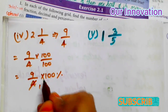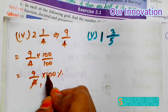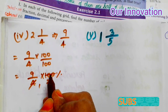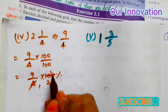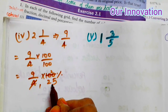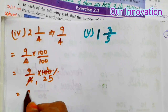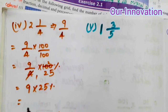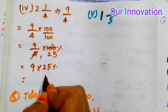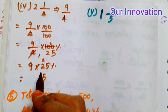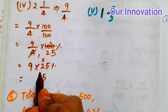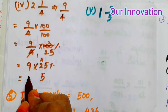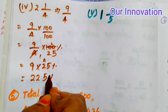Now cancel: 4 is 4, 25 into 4 = 100. Dividing: 4 × 1 = 4, 4 × 2 = 8, balance 2; 4 × 5 = 20, giving 25. So 9 into 25 percentage: 9 × 5 = 45, balance 4; 9 × 2 = 18, 18 + 4 = 22. So the answer is 225 percentage.